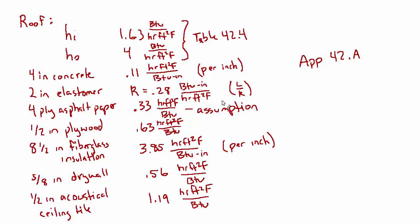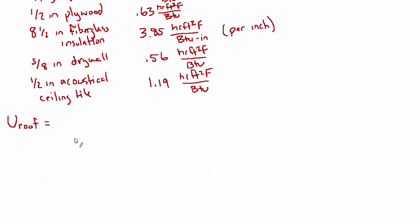So now we're ready to find the overall heat transfer coefficient for the roof. This is going to be a long formula, so let's see if I can get it all on one line. It's going to be 1 over, we have the film coefficients, so 1 over 1.63 plus 1 over 4.